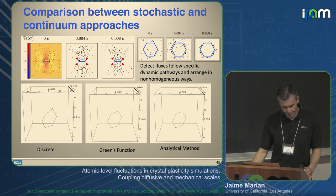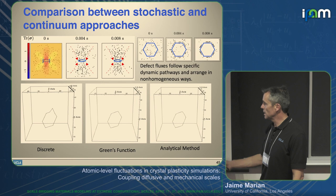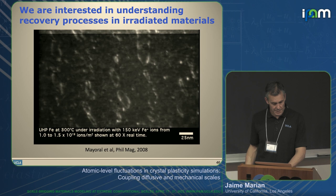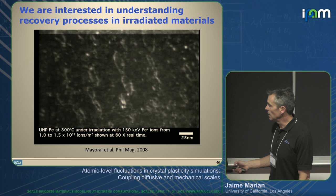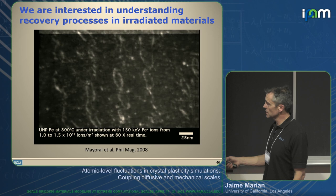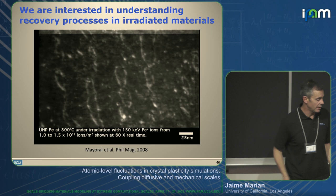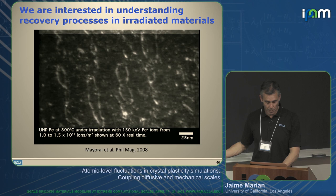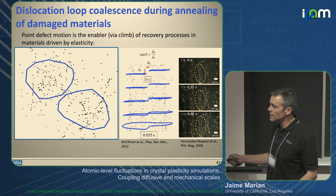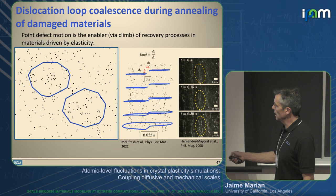We studied coalescence dynamics of prismatic loops, comparing our fully discrete method against analytical and Green's function-based methods from the literature — finding substantial differences. In irradiated iron at high temperature, loops larger than a critical size start to coalesce, forming elongated raft structures driven by elastic forces reducing total line length, which requires both glide and climb. Using our methods, you can see vacancies moving non-uniformly, letting loops grow by climb and glide, eventually merging — qualitatively replicating experimental observations.